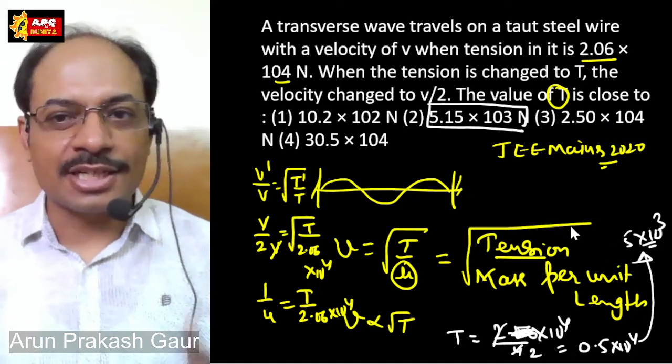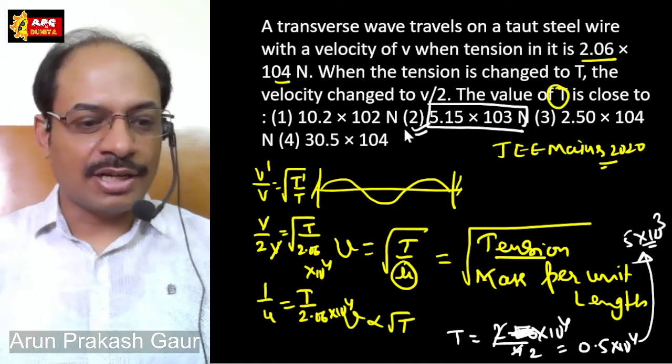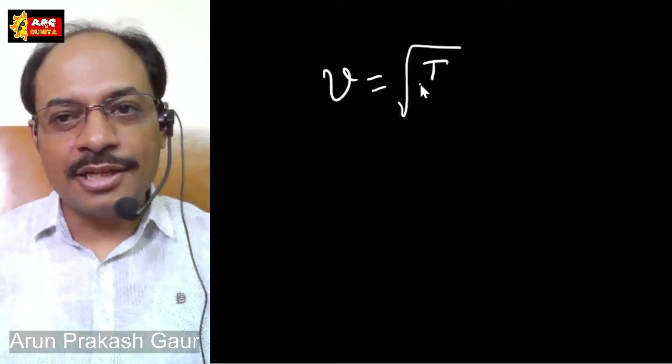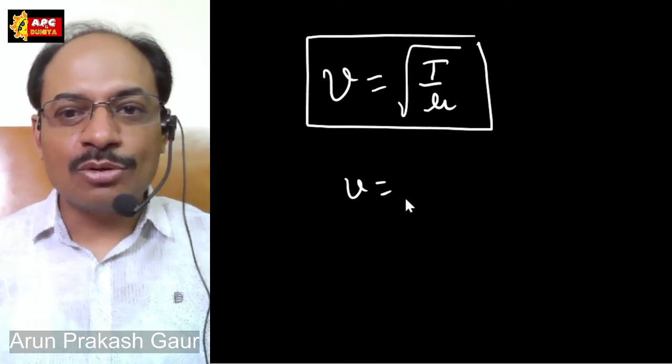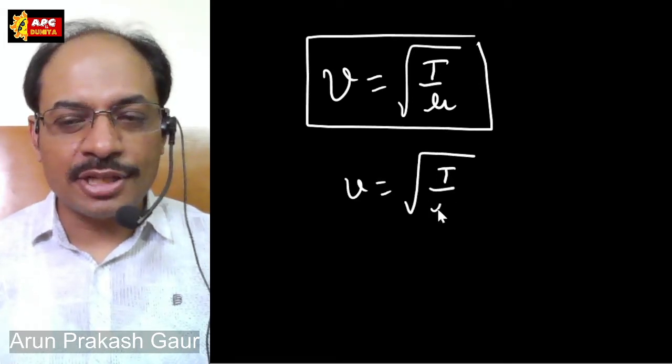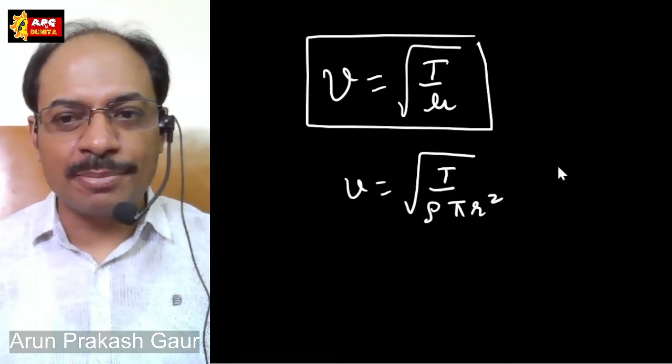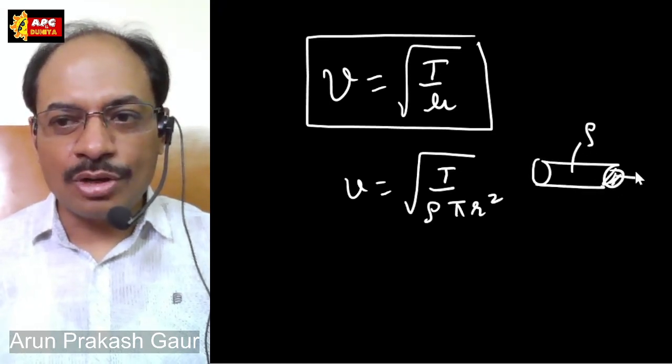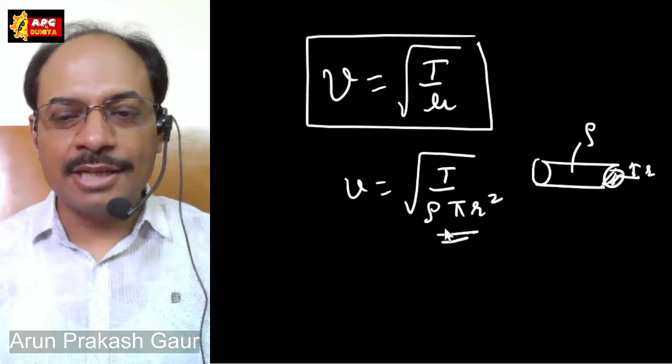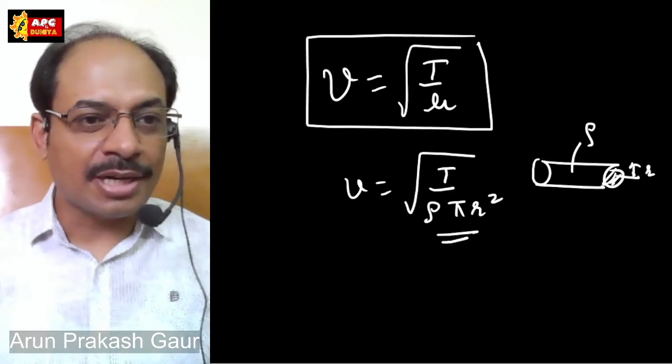So this way this is the answer. This formula is a very important formula children, and many questions come in the exam. One more thing to note, the mass per unit length can also be written as ρ into π r², where ρ is the density of this wire and r is its radius. This is also a formula.